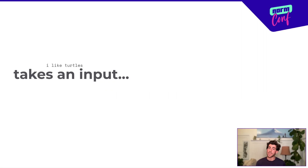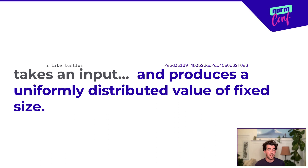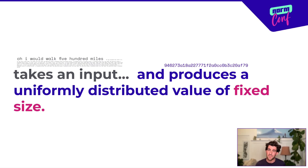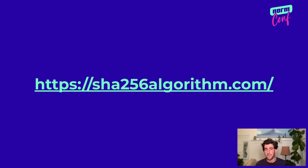We're talking about hash functions, which are functions that take an input and produce a uniformly distributed value of fixed size. Uniformly distributed basically means random, and fixed size means no matter how big this input gets, the output is always going to be exactly the same length. If you want to see a visual explanation of this, check out this website — it's really cool. It gives you a peek into the curtain of a complex hashing algorithm.